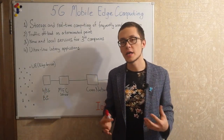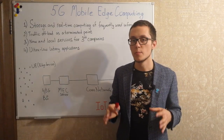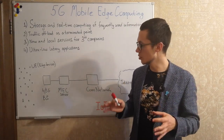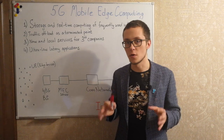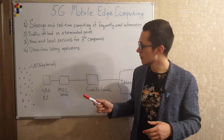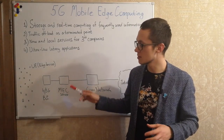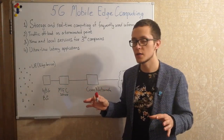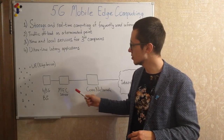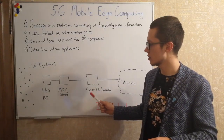There are many architectures, but basically mobile edge computing technology is a server — it is a platform located somewhere in the network. In most cases it is located between the base station and the core network.